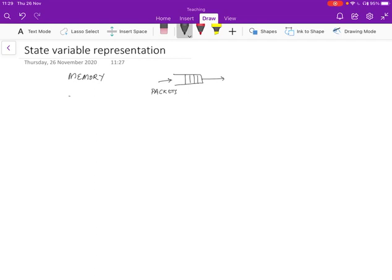The state variable here is the amount of data in the buffer. Let's call that X. The reason it's the state variable is because the future evolution of the system depends on this memory.